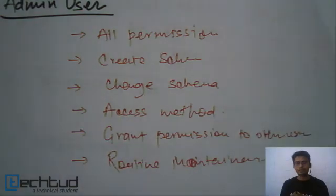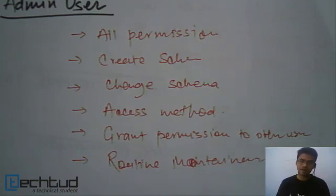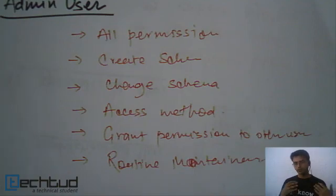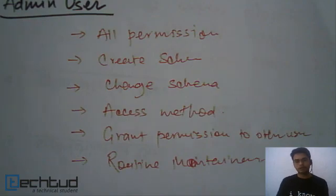In this lecture we went through the different kinds of users. We studied about naive users, application programmers, sophisticated users, and specialized users. At the end we studied about administrator user. Administrator is all in one user who has all the permissions, who grants permissions to others, who can create schema, delete schema, change the definition of schema, and who also does routine work like clearing the logs. With this lecture we end up with the basics. Next lecture hopefully we will start ER diagram. See you in the next lecture. Thank you.